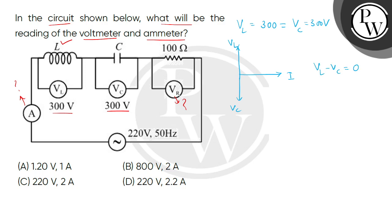The voltmeter will give us a reading equal to the applied voltage, which means VR will be 220 volts. Now we can find the current I.